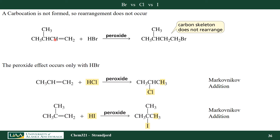If I take an alkene and react it with HBr in the presence of peroxide, I get anti-Markovnikov addition of HBr across that double bond to put my bromine on the end carbon. These reactions do not undergo rearrangement because there is no carbocation intermediate — that is one benefit to a radical-based chemical reaction.